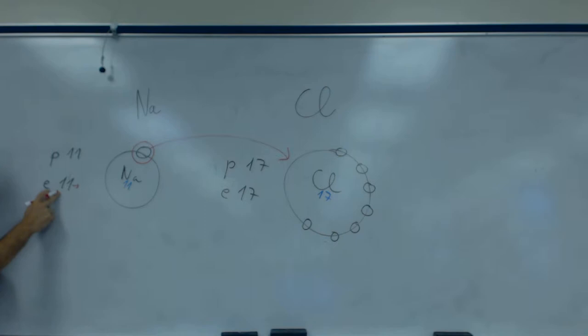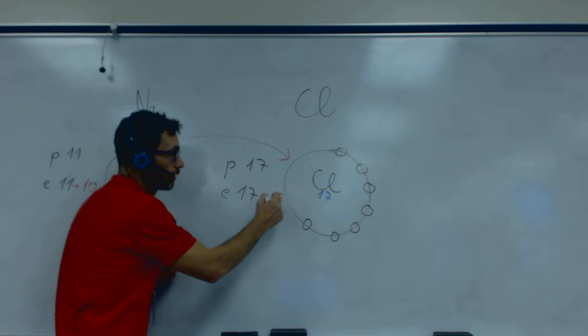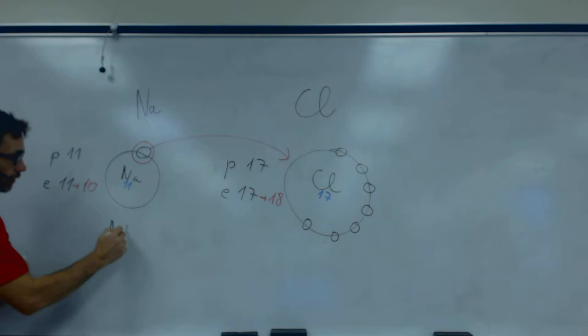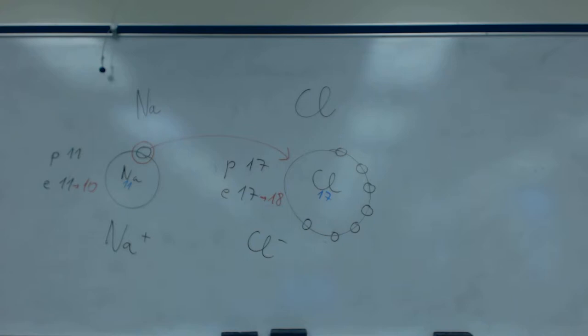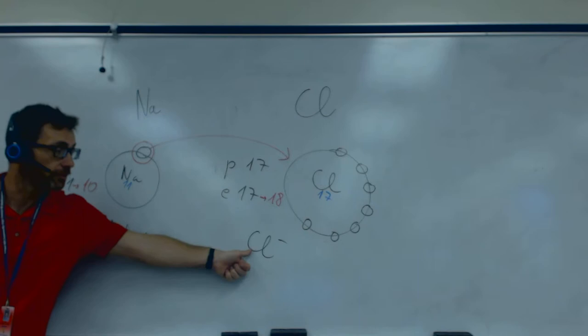So the number of electrons goes from eleven to ten, and here goes from seventeen to eighteen. That's why sodium is positive, because it has one proton more than electrons, and chlorine is negative because it has one electron more than protons. Okay, and they get together because they are opposite: positive and negative.